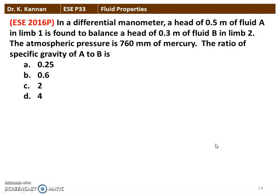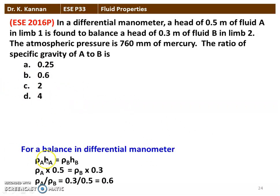The next question is from the 2016 question paper. In a differential manometer, a head of 0.5 m of fluid A in limb 1 balances a head of 0.3 m of fluid B in limb 2. The atmospheric pressure is 760 mm of mercury. The ratio of specific gravity of A to B is calculated using ρ_A × H_A = ρ_B × H_B, giving ρ_A / ρ_B = 0.3 / 0.5 = 0.6. The correct answer is option B: 0.6.